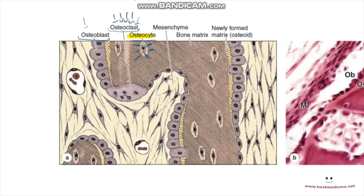What the osteoclast does is resorb the bone. It has matrix-digesting enzymes that are able to break down the matrix, decalcify the bone, and digest or absorb the bone. It functions for bone resorption.